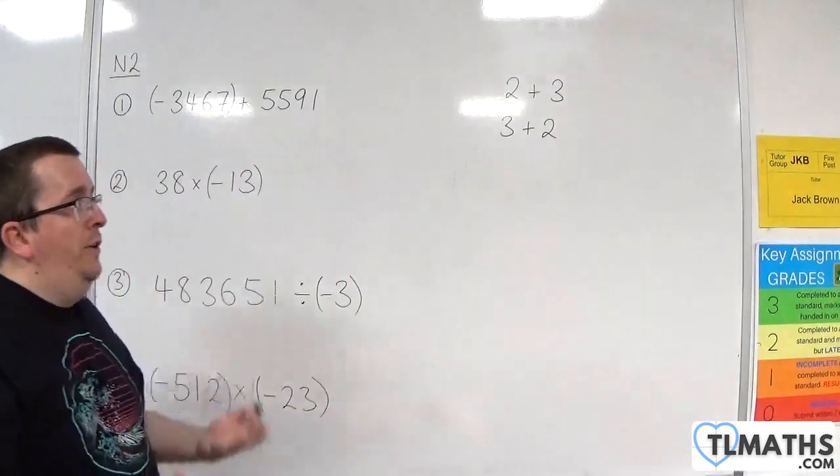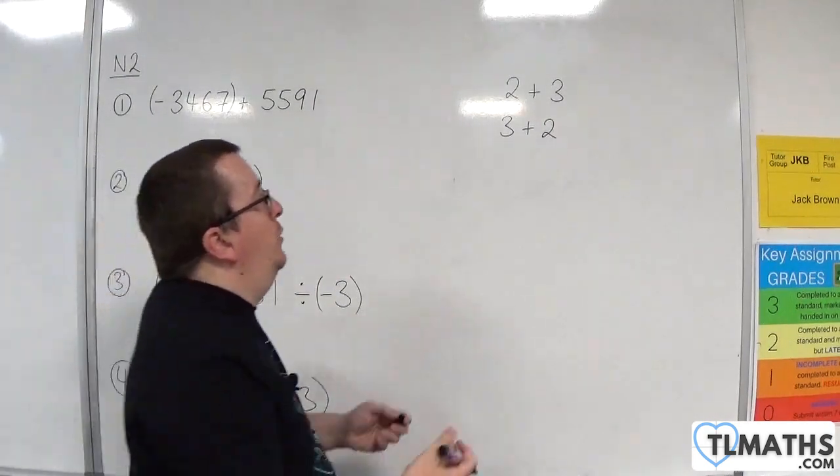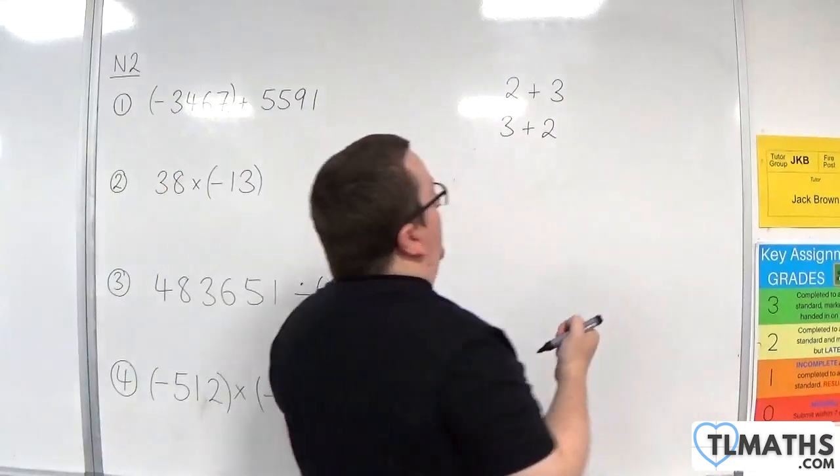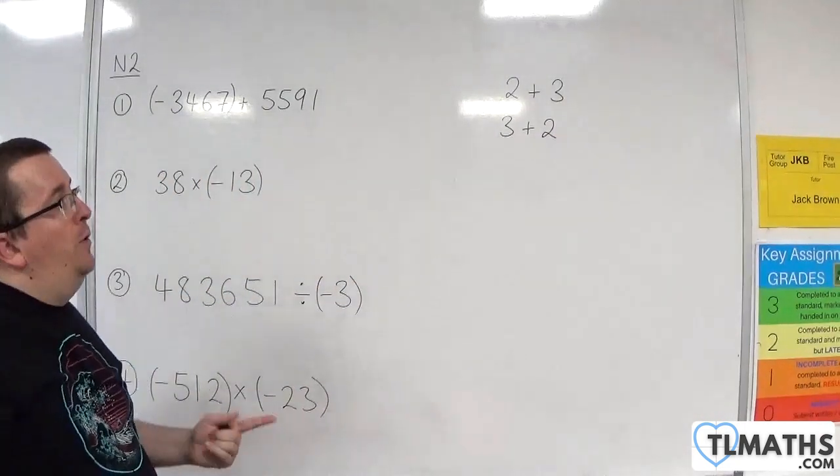This is the commutative law. It just means that you can rearrange those two values and add them together, and you're going to get the same result. Both results will be 5.